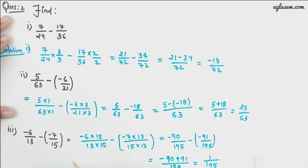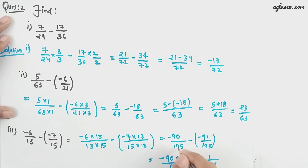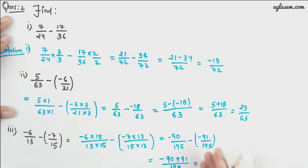Moving further, we have -6/13 minus (-7/15). Again, we make the denominators the same — the LCM is 195 — and solving further, our answer is 1/195.